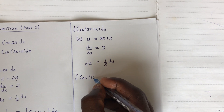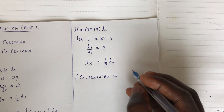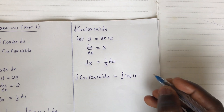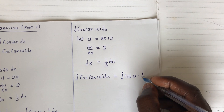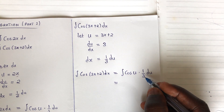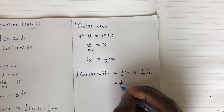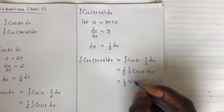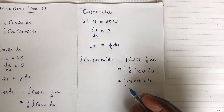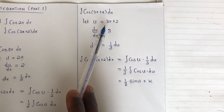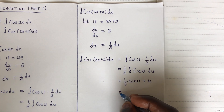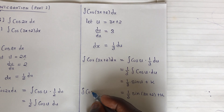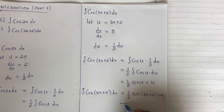So now you rewrite the function in terms of the variable u. The integral of cos(3x + 2) dx becomes the integral of cos(u), and dx is 1 over 3 du. You factorize the 1 over 3 outside, giving you 1 over 3 times the integral of cos(u) du. Integrating gives 1 over 3 sin(u) + k. Since we said u = 3x + 2, we substitute back: 1 over 3 sin(3x + 2) + k. And this is your final result.